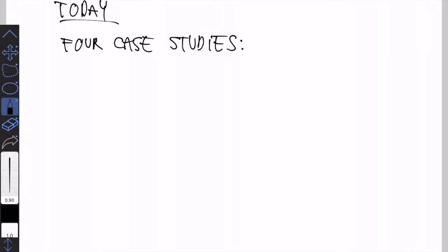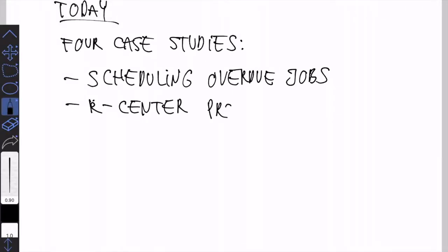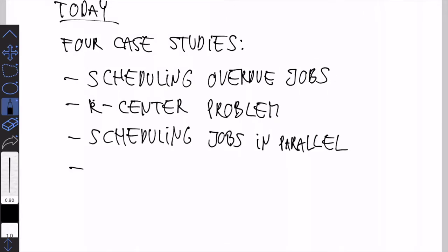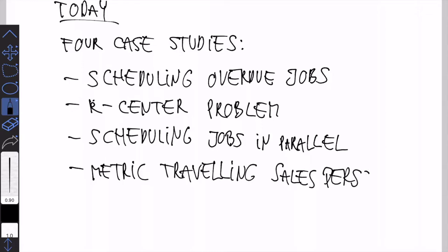Today we are going to look at four case studies exemplifying greedy approaches and local search: scheduling overdue jobs, the k-center problem, scheduling jobs in parallel, and finally the metric traveling salesperson problem. Three of these will exemplify greedy and the last one local search.